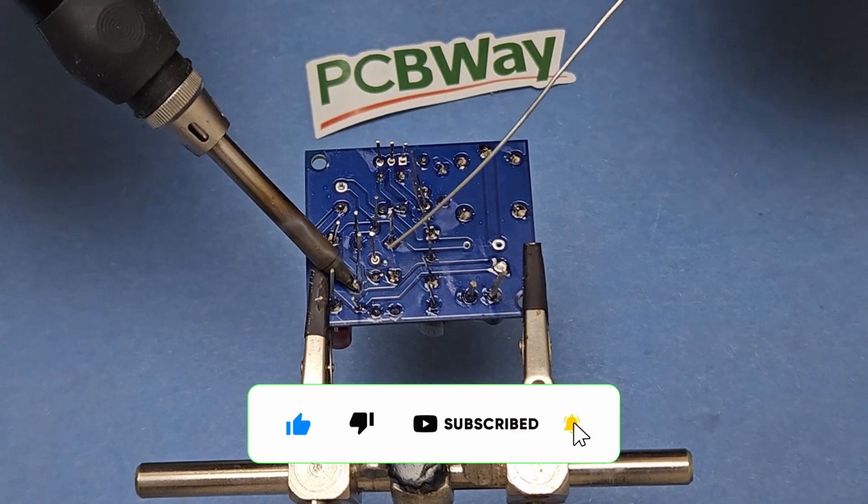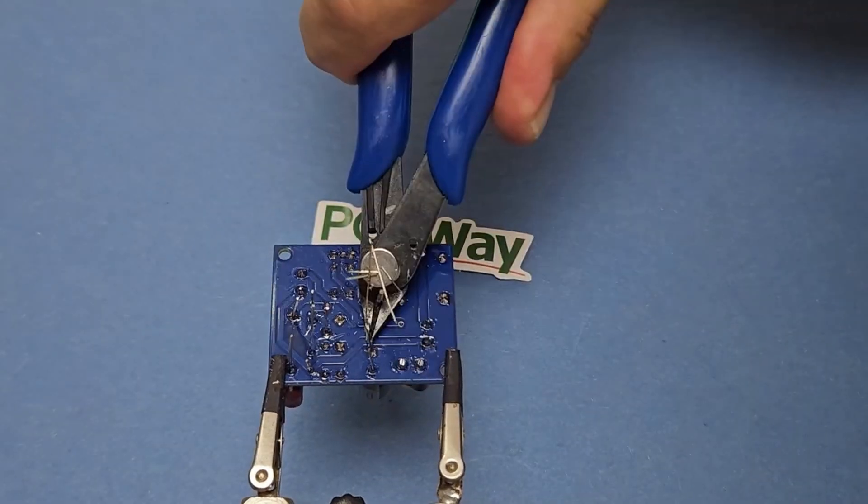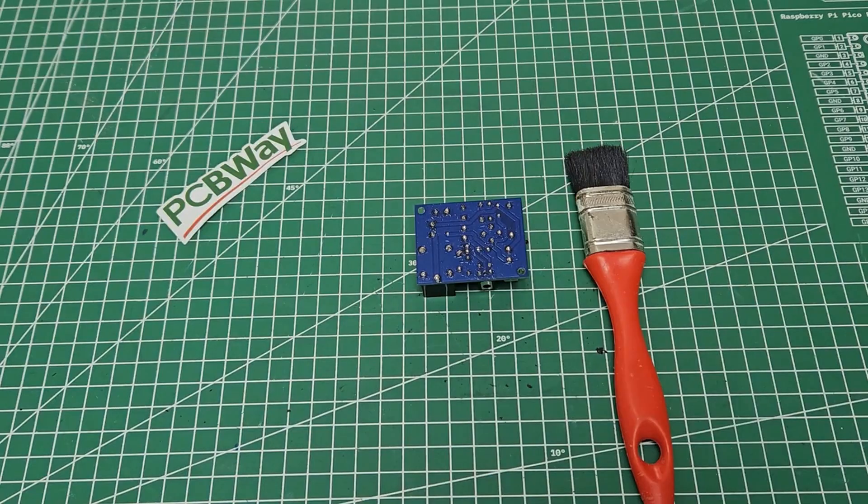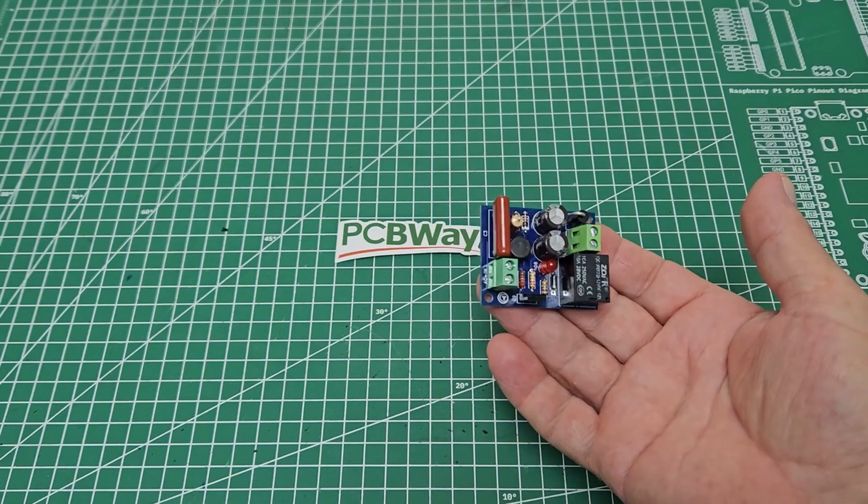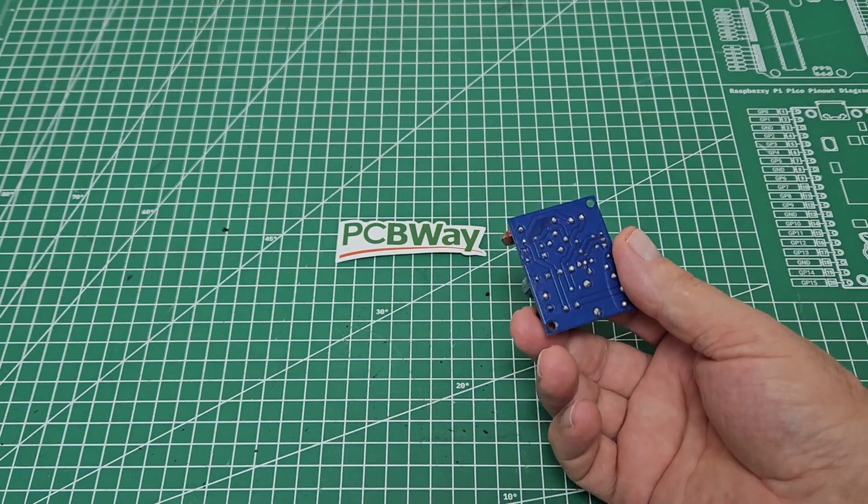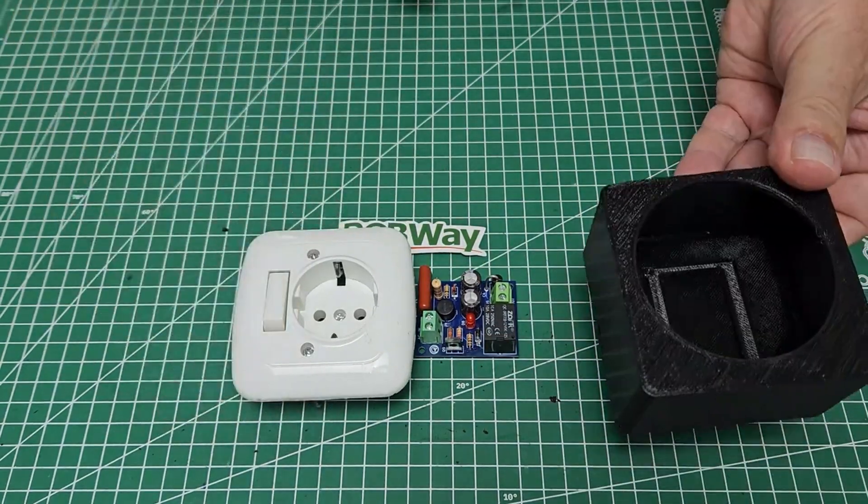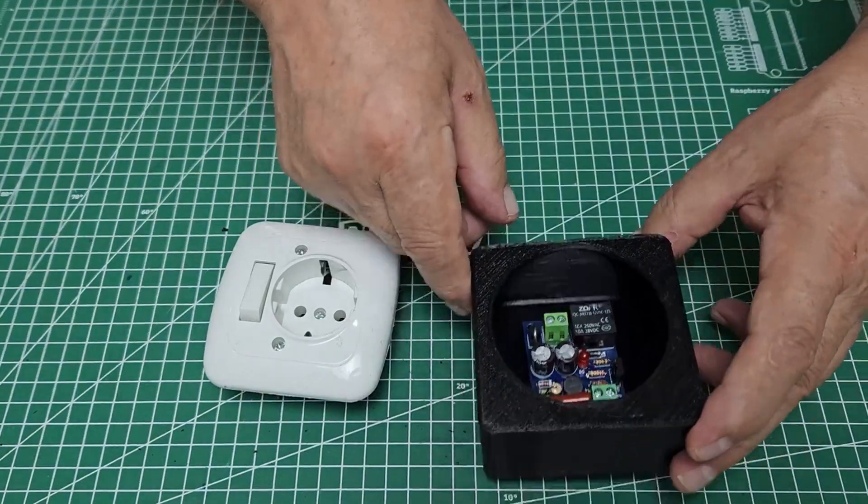The same happens with most power supplies and other devices where large filter capacitors have to be charged, which causes the circuit to draw a large starting current. However, nowadays some manufacturers add thermistors for circuit protection.